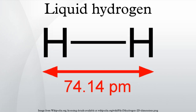Liquid hydrogen is the liquid state of the element hydrogen. Hydrogen is found naturally in the molecular H2 form. To exist as a liquid, H2 must be cooled below hydrogen's critical point of 33 K. However, for hydrogen to be in a full liquid state without evaporating at atmospheric pressure, it needs to be cooled to 20.28 K. One common method of obtaining liquid hydrogen involves a compressor resembling a jet engine in both appearance and principle.